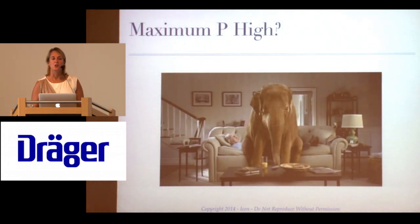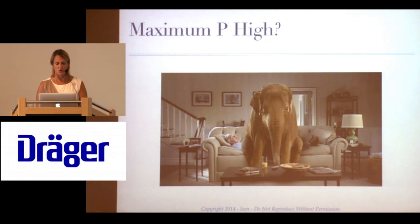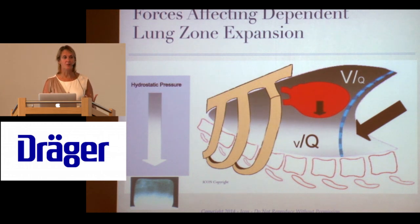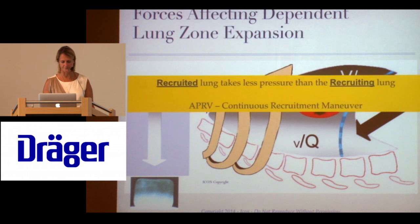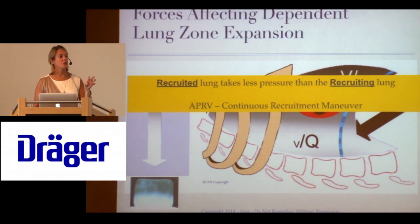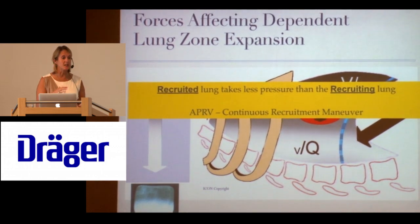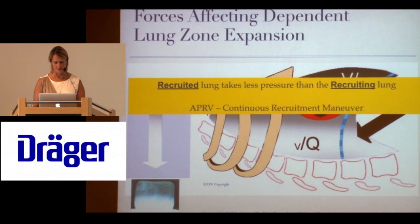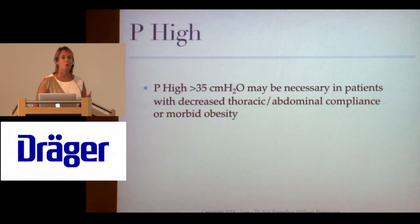Is there a maximum P high? We have to consider what pressure is needed to lift the chest wall against opposing forces. An obese patient lying flat, maybe not spontaneously breathing, might need a higher airway pressure than a thin patient. Also, the recruited lung takes less pressure than the recruiting lung — applying APRV earlier, before complete collapse, may require lower airway pressures than if used only as rescue. A P high greater than 35 may be necessary in patients with lower thoracic and abdominal compliance.